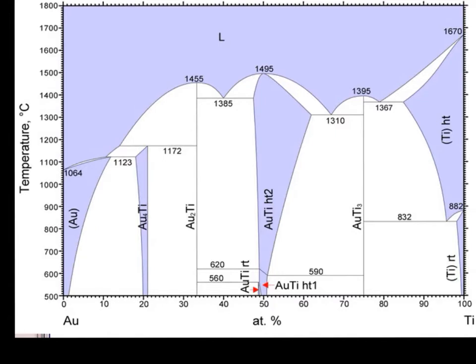We can look at another example with multiple eutectic points: the phase diagram for gold and titanium. You can see a number of eutectics on here, where liquid transforms to two solid phases upon cooling. One region is titanium plus AuTi3. There is also what's called a eutectoid, where you have the same kind of reaction but the high-temperature phase is also a solid. So this phase diagram has a number of eutectic reactions.